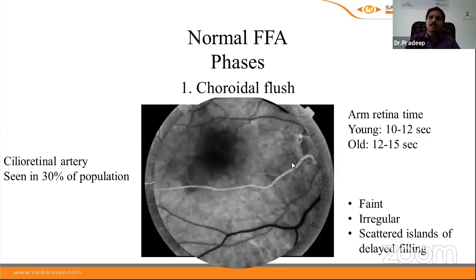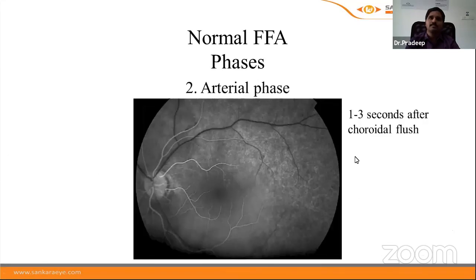The cilioretinal artery is a branch of the ciliary artery supplying the retina, arising from the choroidal vessels, so it fills in the choroidal phase. It is seen in around 30% of the population. The second phase is the arterial phase, characterized by filling of retinal arteries while the retinal veins still show hypofluorescence. It usually occurs 1–3 seconds after the choroidal flush.